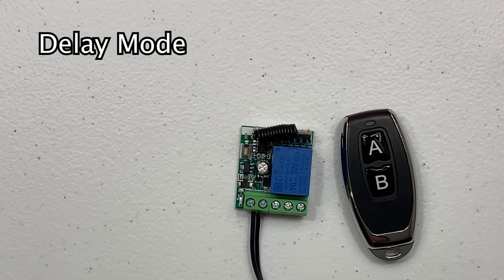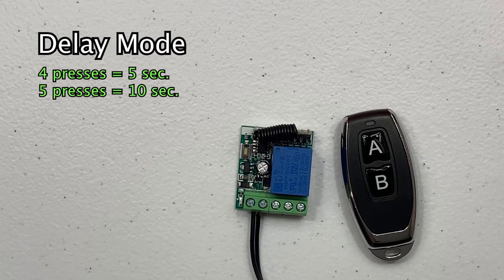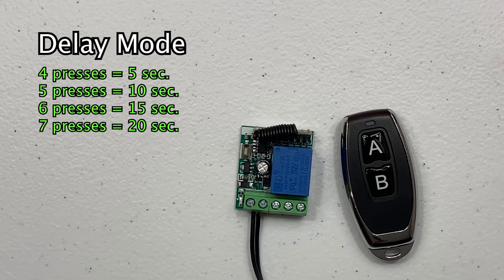To set the relay into delay mode, repeat the same procedure but press the button four times for five seconds, five times for ten seconds, six times for fifteen seconds, or seven times for twenty second timer.